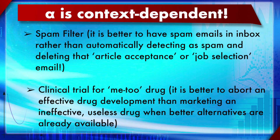Another example is a clinical trial for a 'me-too' drug — one that is a cheaper alternative when effective treatments already exist (e.g., tuberculosis drugs). Using a low alpha is acceptable here because the rationale is: it is better to abort an effective drug's development than to market a useless drug when better alternatives are already available. So a very low alpha like 0.01 is appropriate in this context.